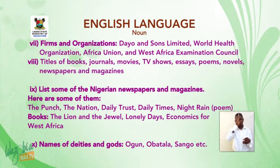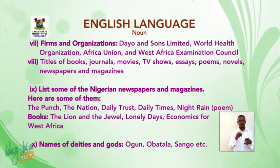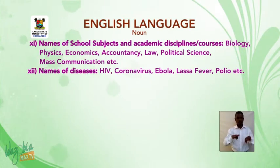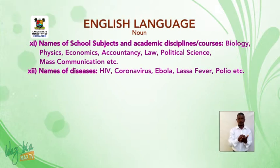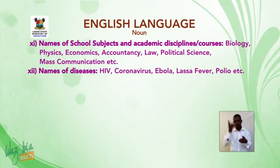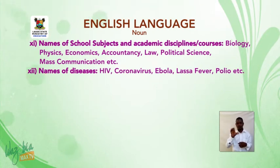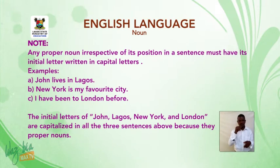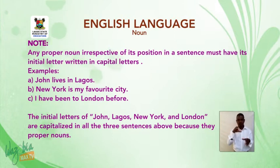Names of deities and gods: Ogun, Obatala, Shango, etc. Names of school subjects and academic disciplines or courses: biology, physics, economics, accountancy, law, political science, mass communication, etc. Names of diseases: HIV, coronavirus, Ebola, Lassa fever, polio, etc. Note: any proper noun, irrespective of its position in a sentence, must have its initial letter written in capital.